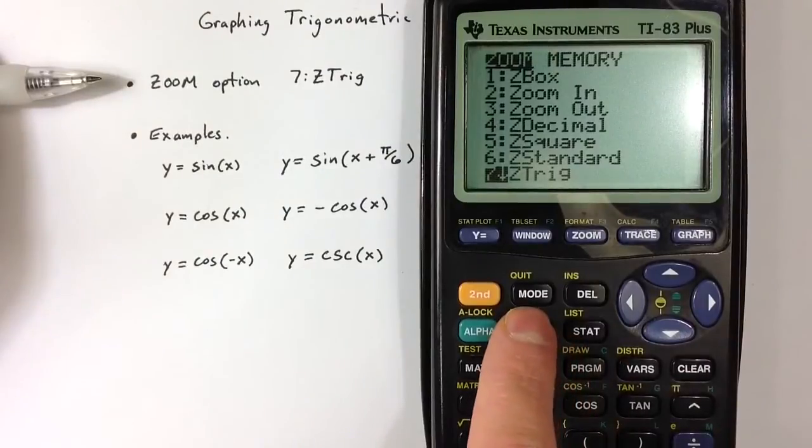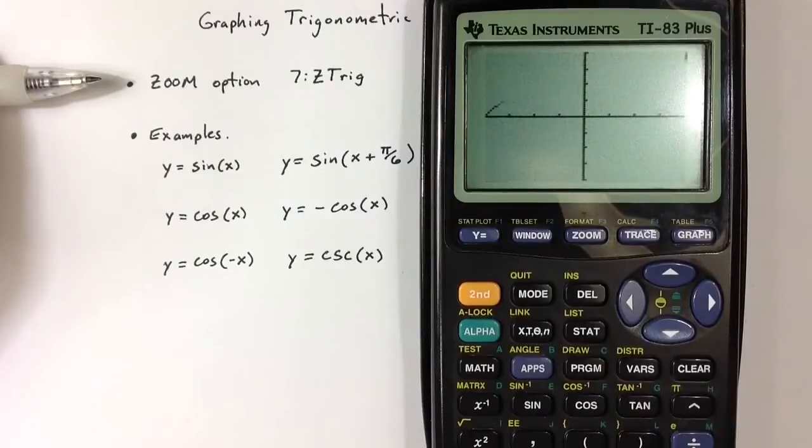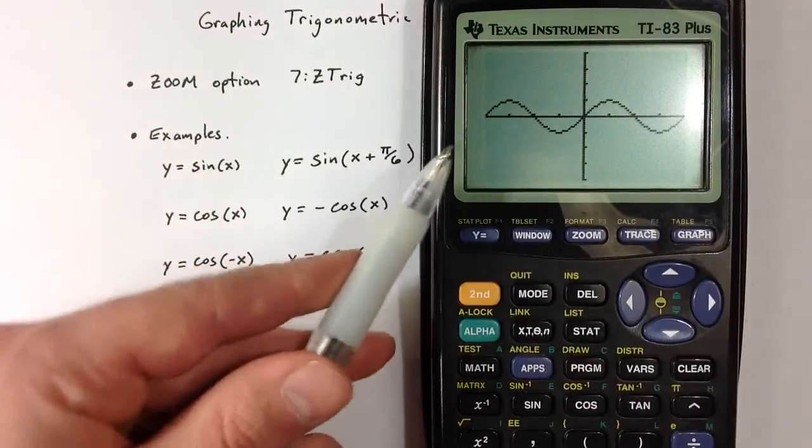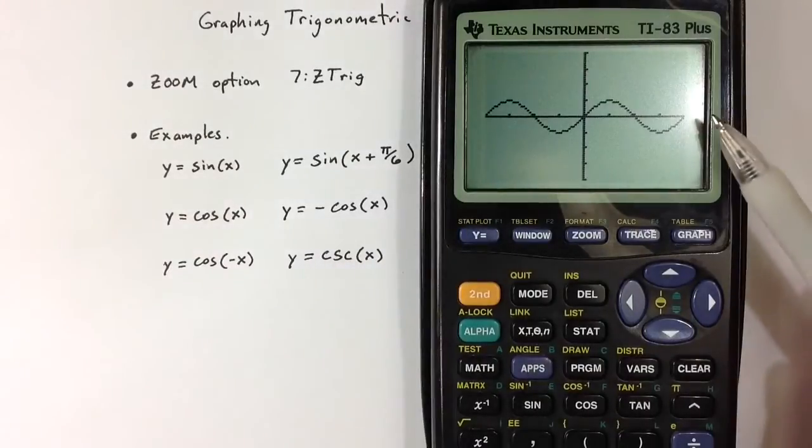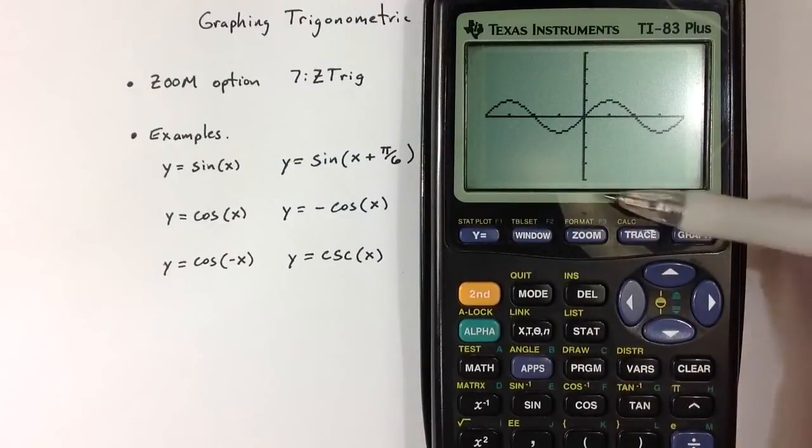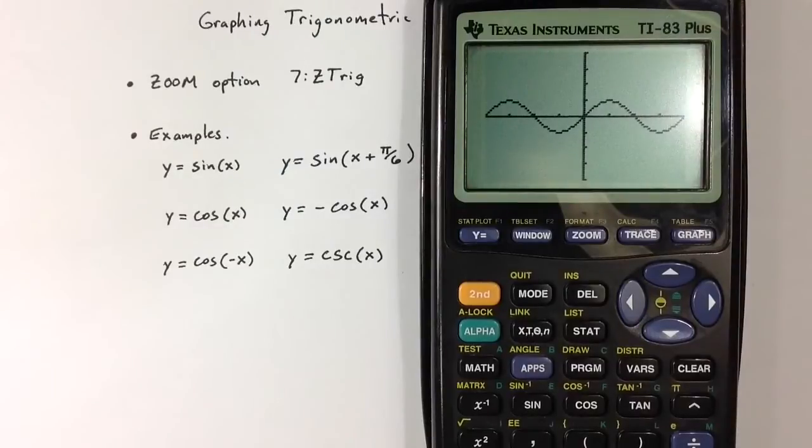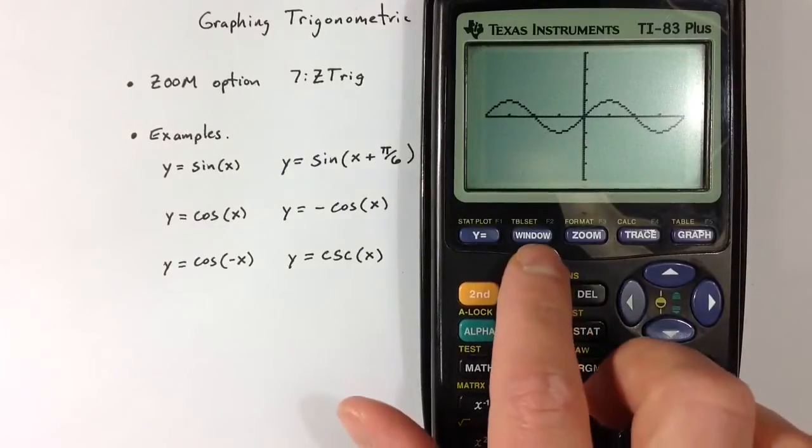We happen to be in radian mode, so if I choose option 7 in radian mode, it's going to start at roughly negative 2 pi and the function ends at positive 2 pi. So the x values go from negative 2 pi to positive 2 pi, and the y values go from negative 4 to positive 4. And so that gives us a pretty nice-looking sine curve.